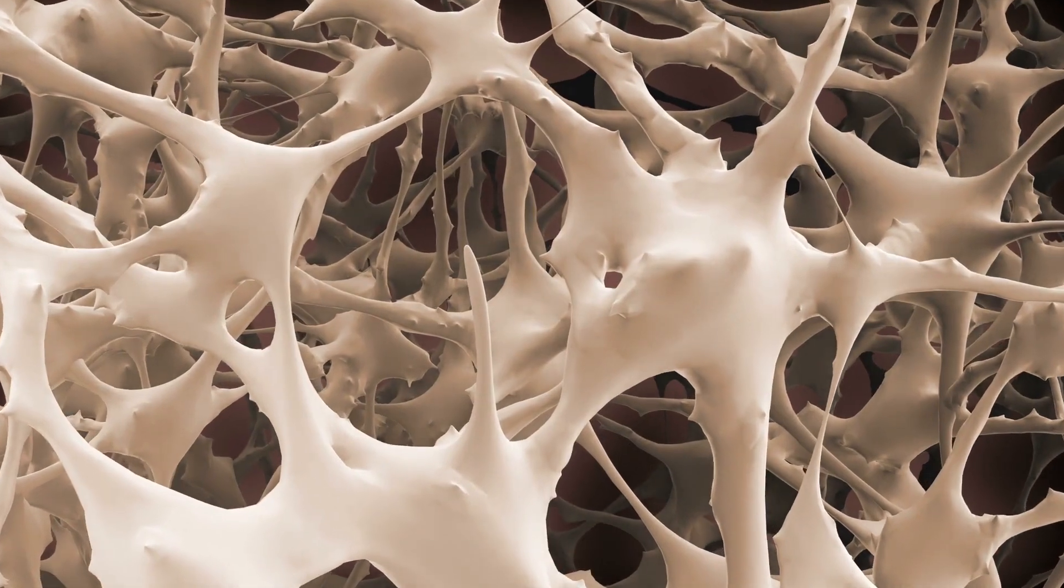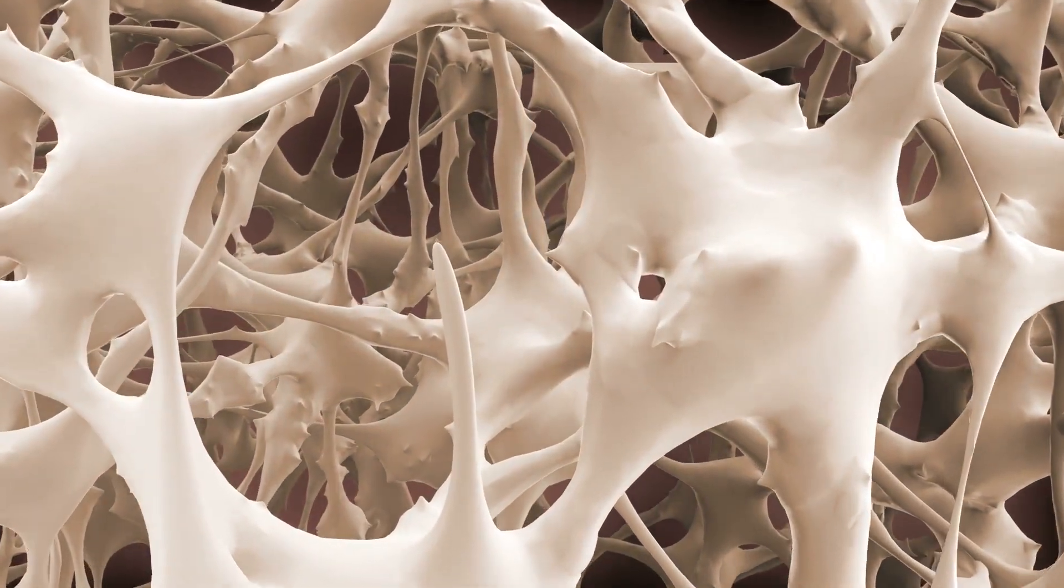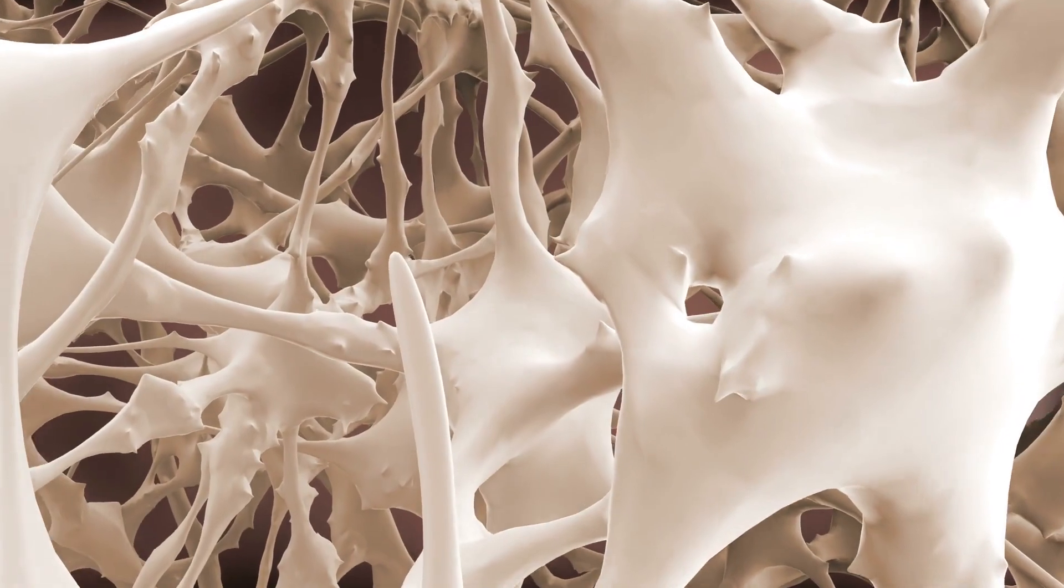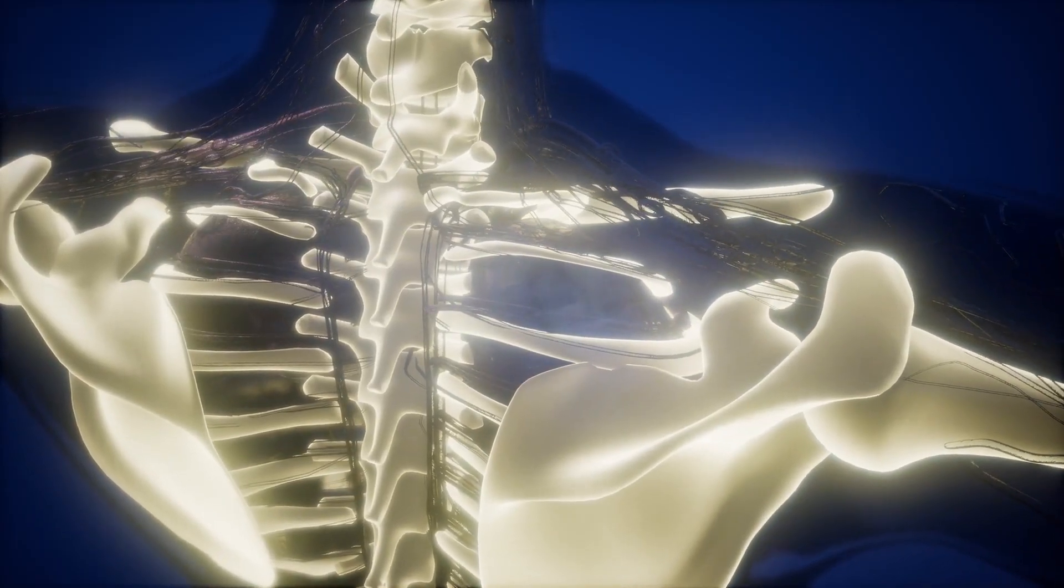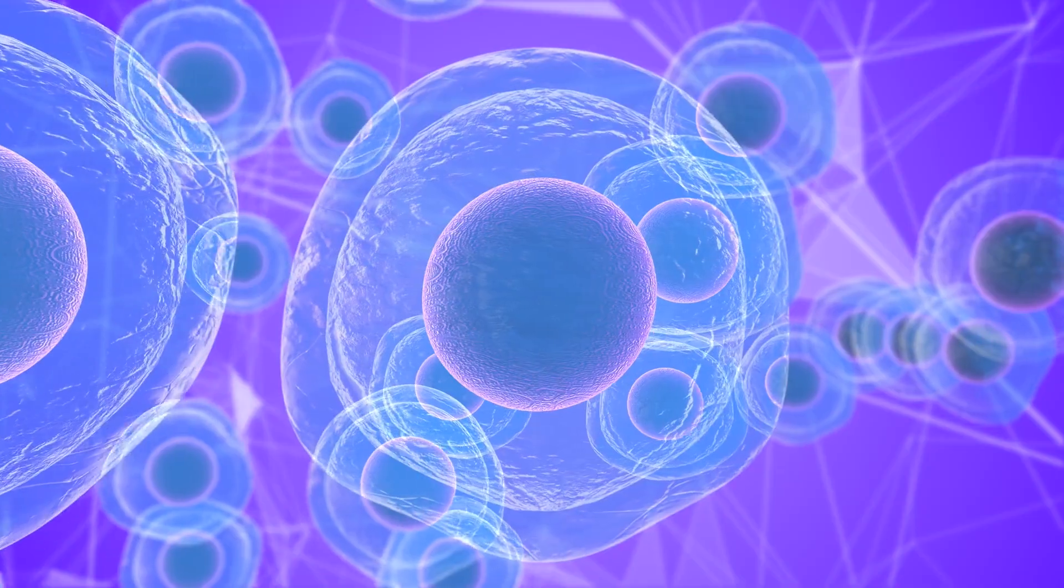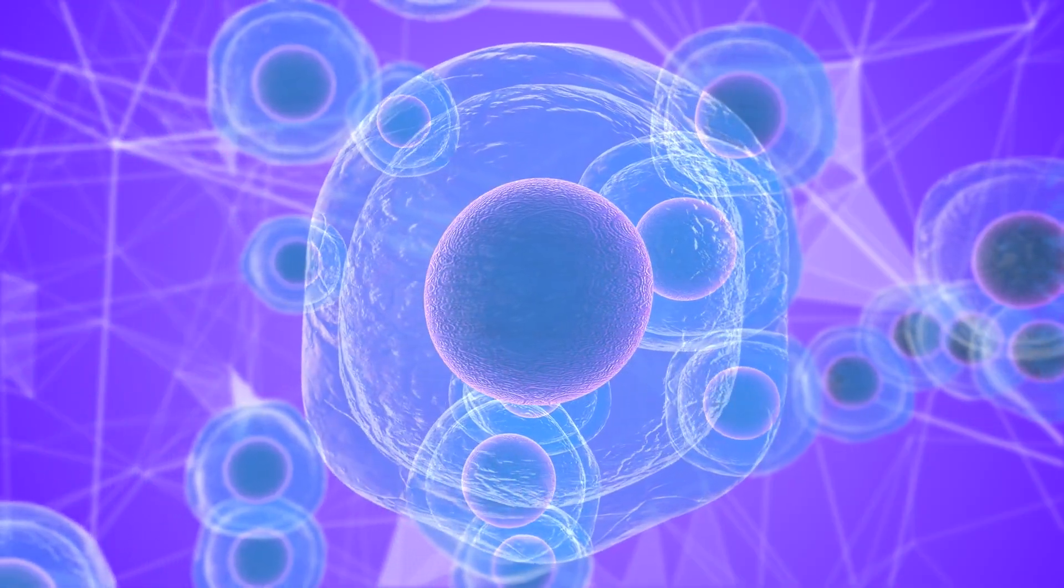If the immune system is a police force, the bone marrow is the police academy because this is where the different types of immune system cells are created. All cells of the immune system are created in the bone marrow from a common type of starting cell called a stem cell.